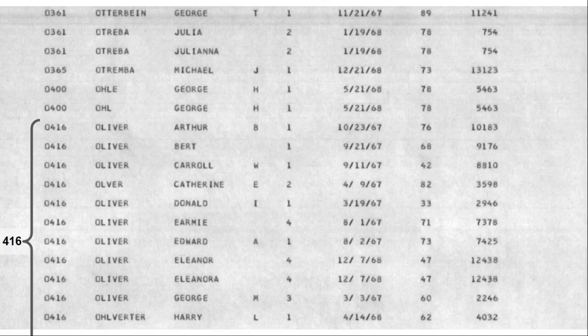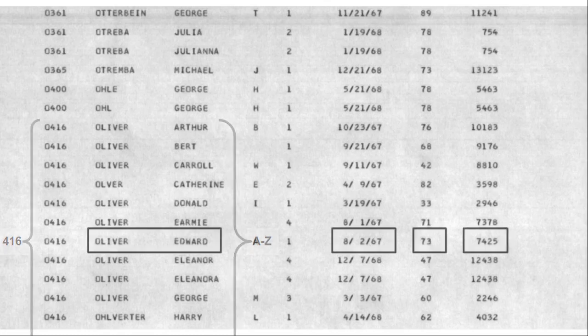Within this section, it is actually organized by first names. And here is Edward Oliver, followed by the date of death, August 2, 1967, his age when he died, and the death certificate number 7425.